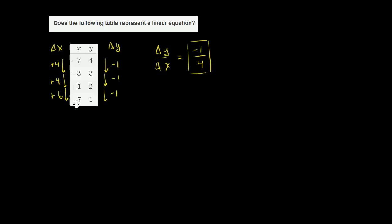going from this third point to this fourth point, is negative 1 over 6. So it is not. So just for this last point right over here, for this last point, our change in y over change in x, or I should say really between these last two points right over here, our change in y over change in x.